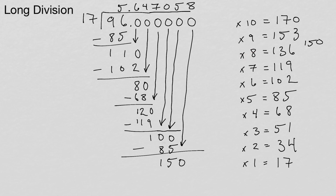If you want to keep going, you keep repeating this process of subtracting and bringing zeros down. This is your algorithm for long division. Start with the multiples chart, then do your subtraction bringing zeros down. If you like this technique, leave a like on my video, subscribe to my channel for more, and leave a comment down below. Thank you.